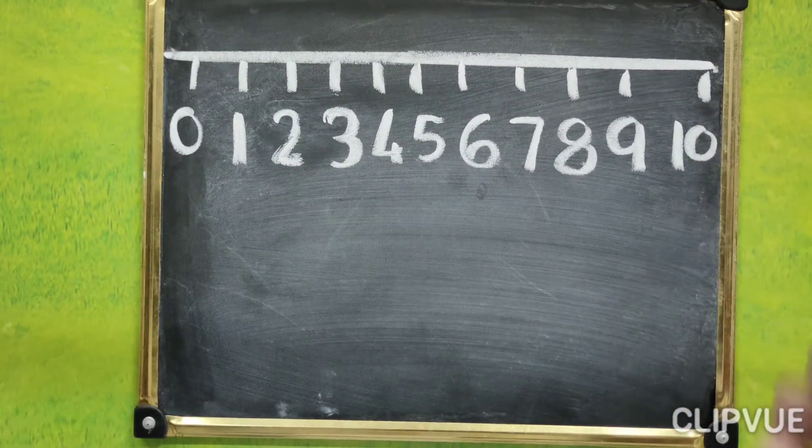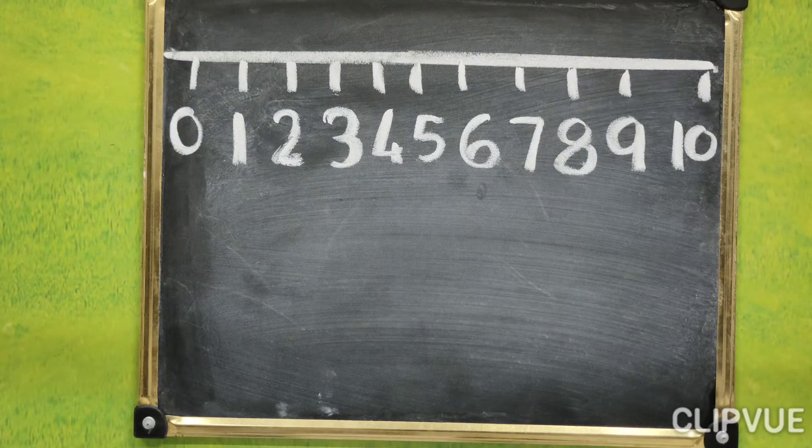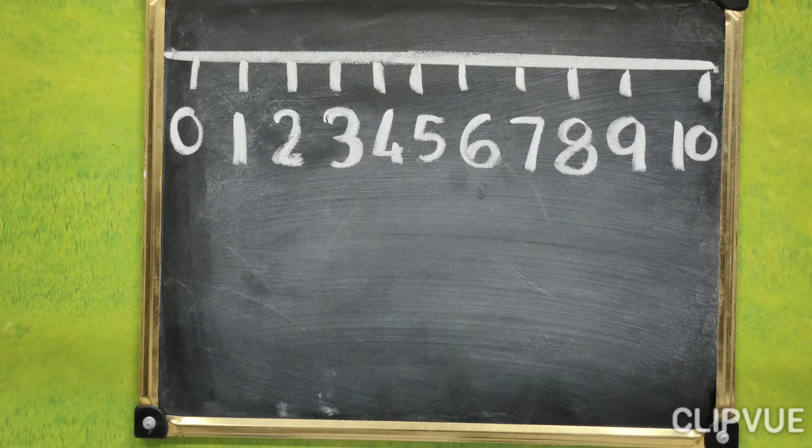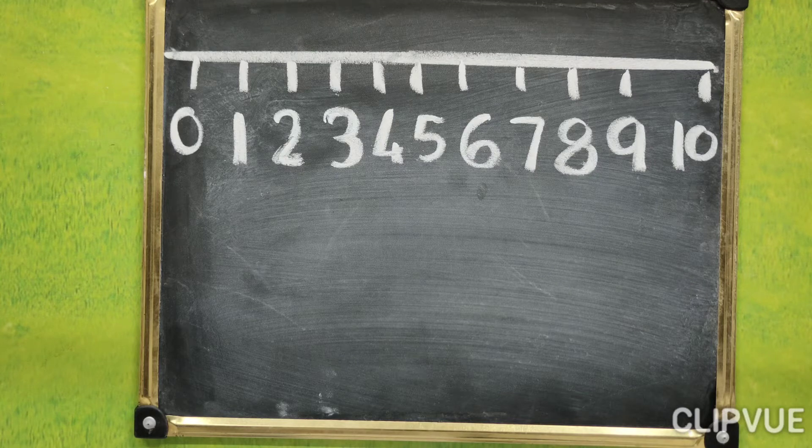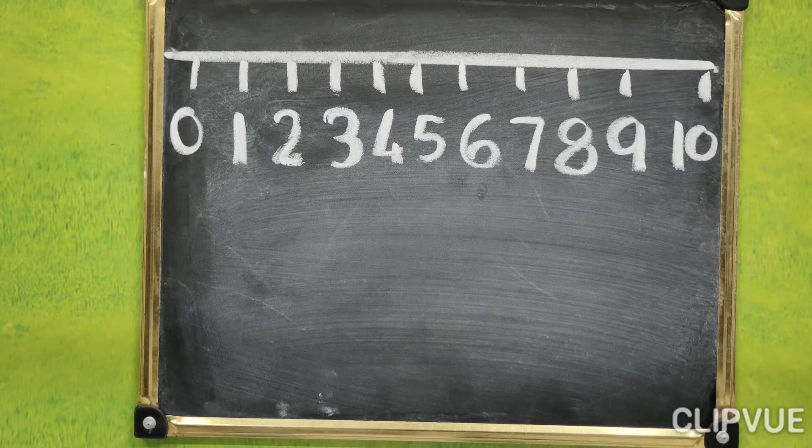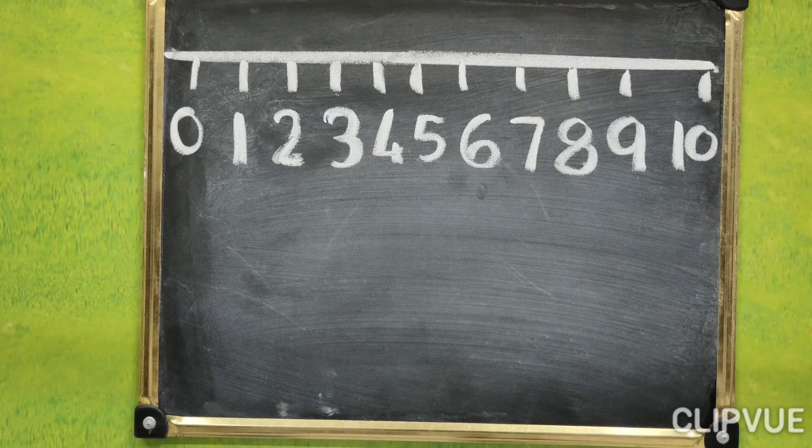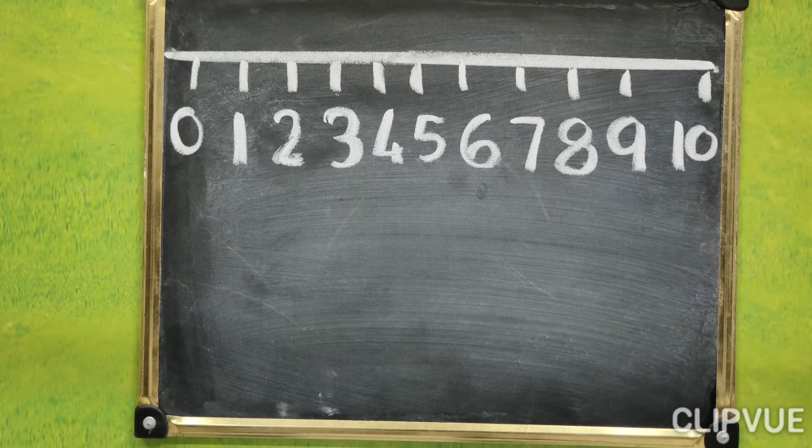What is the meaning of big number? Big number means which comes after, which comes after or below is called big number.